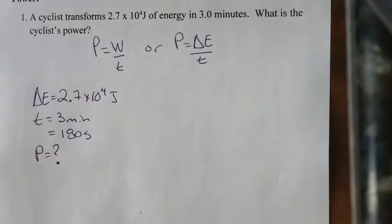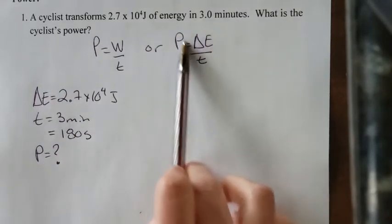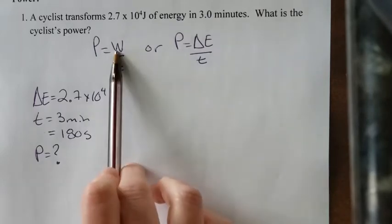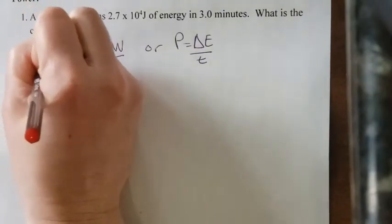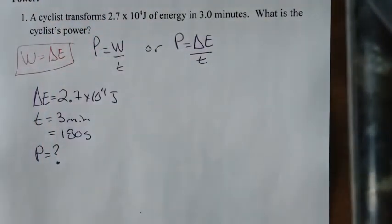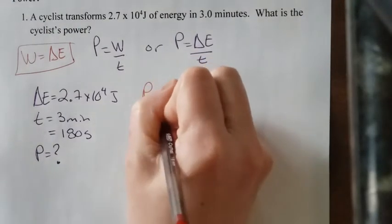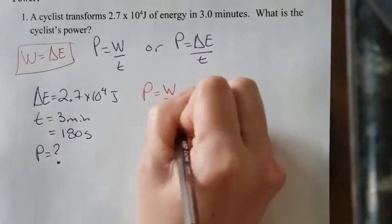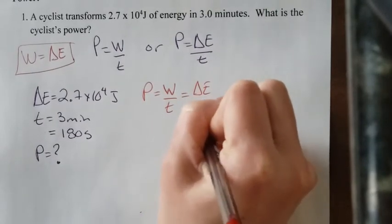So in this case here, we're given energy, so we're going to use the energy formula. It's good to know that work and change in energy mean the same thing. We learned before that work was actually equal to the change in energy. So if you hear work or you hear energy, it means the same thing. So we know power is equal to work divided by time or the change in energy divided by time.